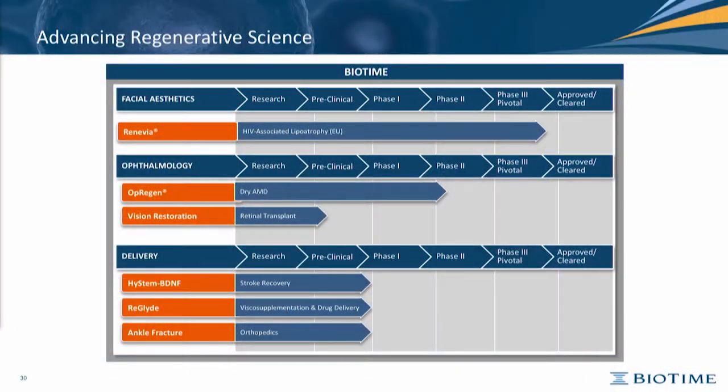I want to summarize what BioTime is. We have the business of using stem cells that are derived and produced by differentiation. The main product we are now testing is retinal pigment epithelial cells, but we also have other types of products. Ranibia is a hydrogel that serves as a scaffold for stem cell insertion in cosmetic surgery, and we also have work in the ophthalmology arena.